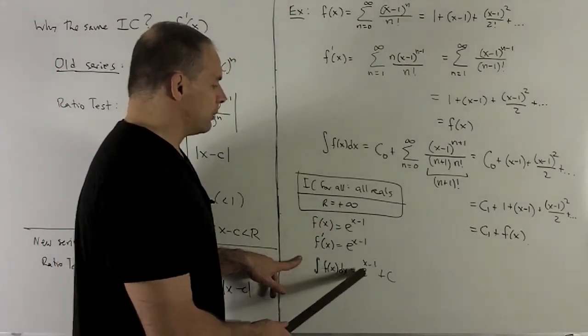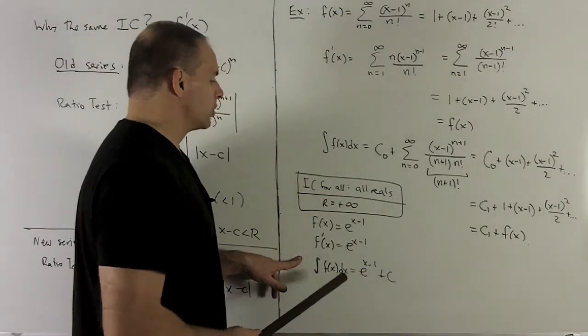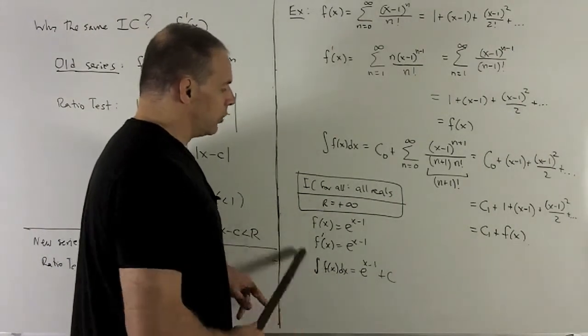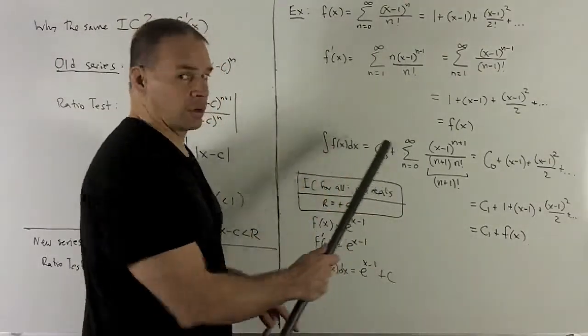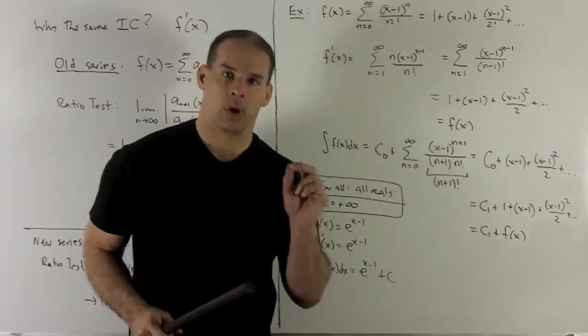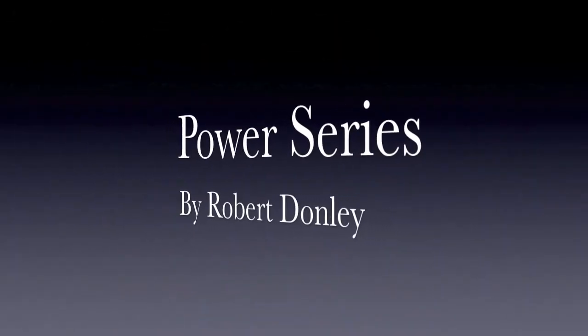It's just going to be e^u plus a constant. So when I put the u back in, I'm just going to have e^(x-1) plus a constant. So we see that when we use the closed form, it's going to agree with what we get when we use the series form. More on that later. Thank you.